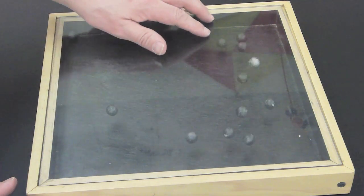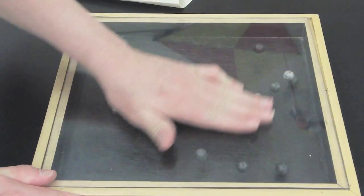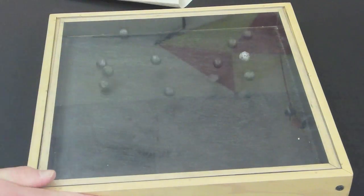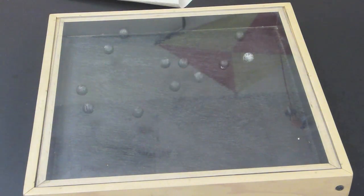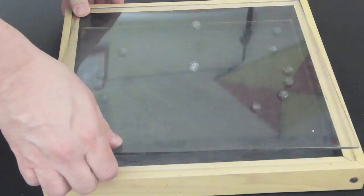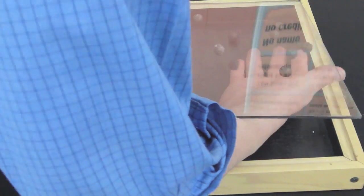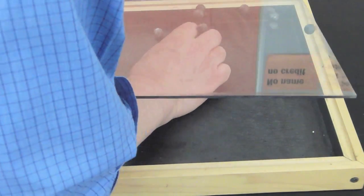Now, when I bring my hand close to the surface, it actually disturbs the charge and it's going to cause the balls to move again. Now, let's try this one more time. This time, I want to put a couple of the balls on top of the plastic sheet and see what happens.